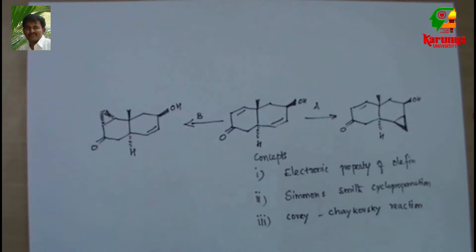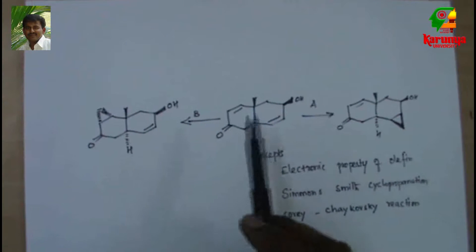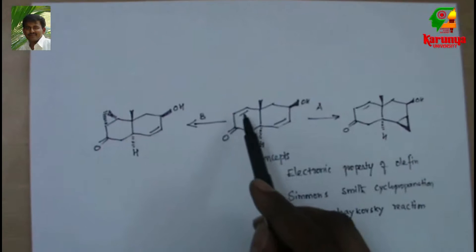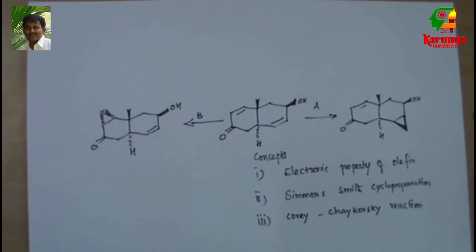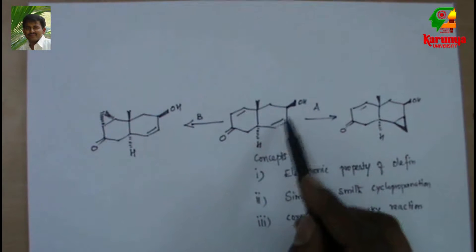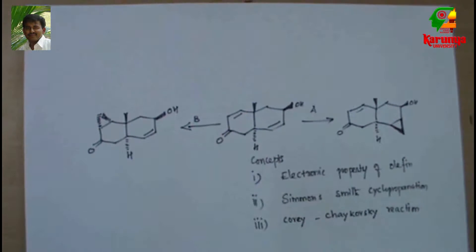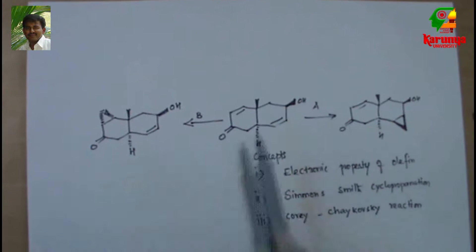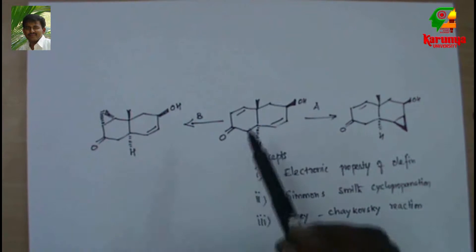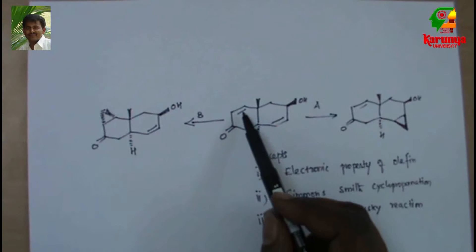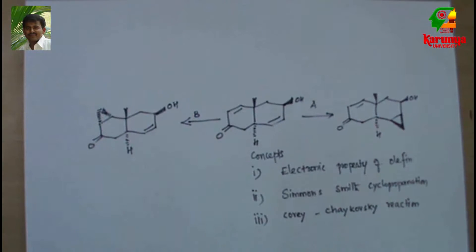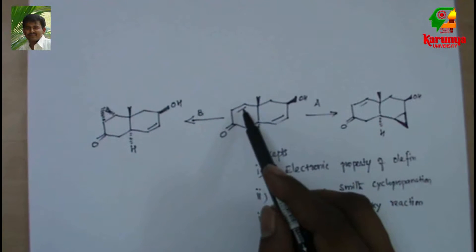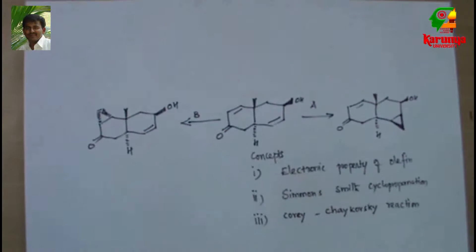Before going to the concepts, look at the starting material. It contains two olefins in a bicyclic system. One olefin is attached to carbon-carbon with no electron donating or electron withdrawing group. For the other olefin, it is attached with a carbonyl group. So basically this is an alpha-beta unsaturated system, and the other is an isolated double bond.